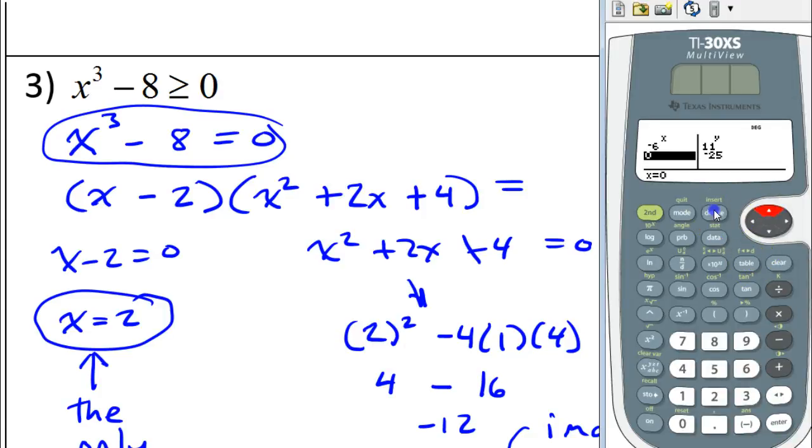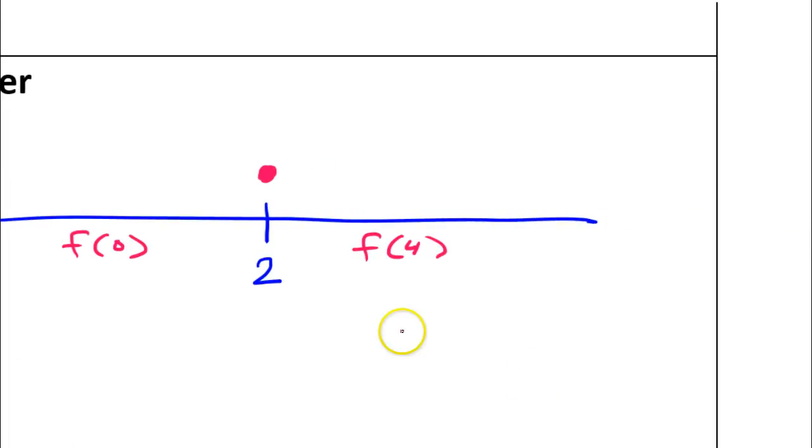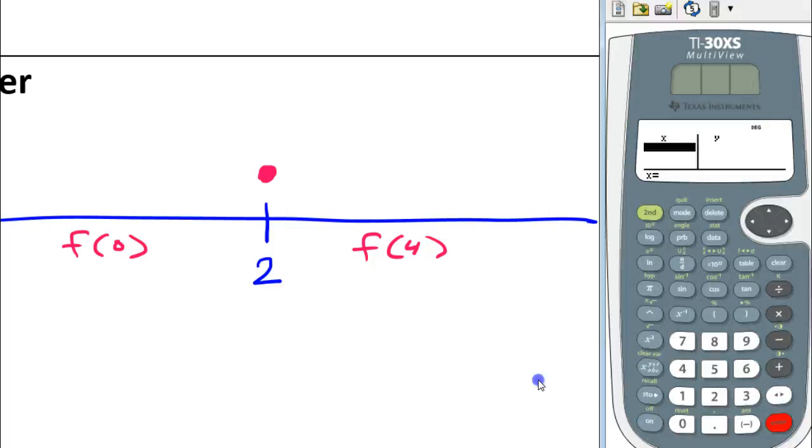I think I'm just going to clear this out while I'm in here. Fresh start and all that. So, I need x to the third power minus eight. Make sure you're in ask mode. And the two values I want to see are zero and four. So, I'll put in zero and four. So, I get negative eight and fifty-six.